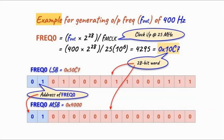As an example, to generate a waveform at 400 Hz with 0 phase shift, we calculate the 28-bit value to be stored in frequency register 0 using this formula. Applying the values gives us the resulting hexadecimal value.